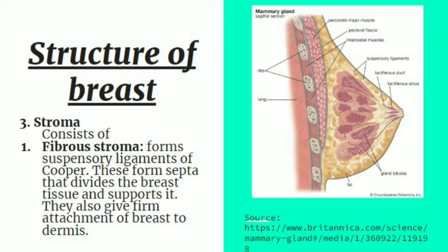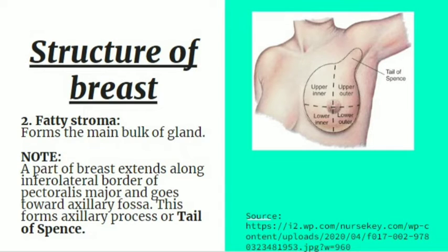The stroma is the supporting tissue of the breast, composed of fibrous stroma and fatty stroma. The fibrous stroma, also called the suspensory ligaments of Cooper, is connective tissue that divides the breast tissue into different compartments. It acts as a septum, supporting the lobes of the breast and giving firm attachment to the dermis. A part of the breast extends along the inferior lateral border of the pectoralis major into the axillary fossa, forming the axillary process of the breast, also called the tail of Spence.